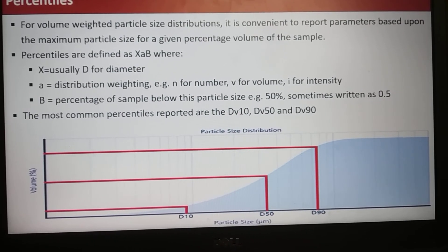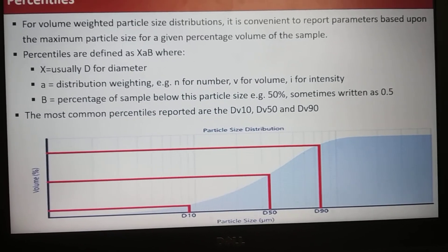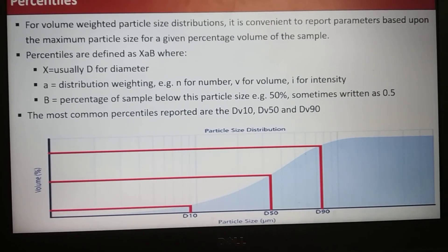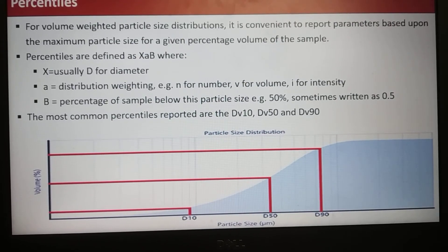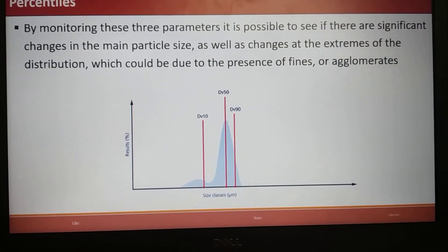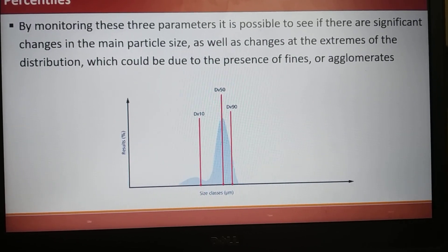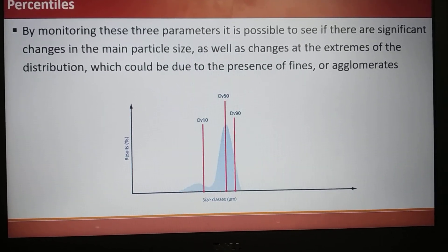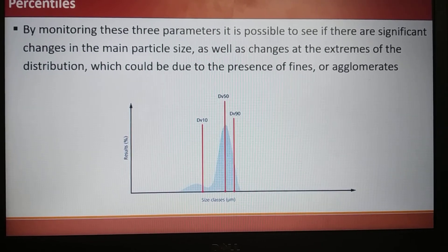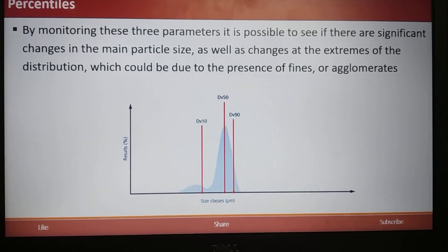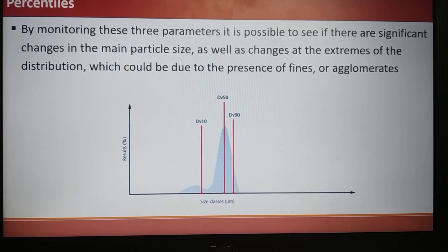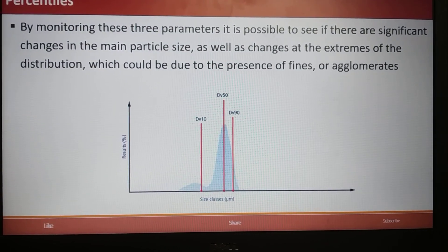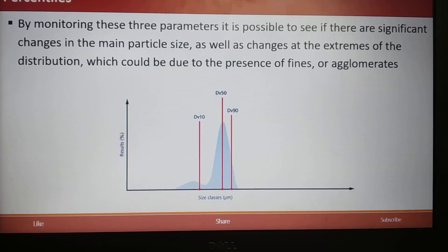The most common percentiles reported are Dv10, Dv50, and Dv90, representing 10%, 50%, and 90% percentile of particles. By monitoring these three parameters, it is possible to see if there is significant change in the main particle size, as well as to indicate changes in the extremes of particle size distribution, which could be due to presence of fines (which will impact D10) or agglomerates (which will impact D90).